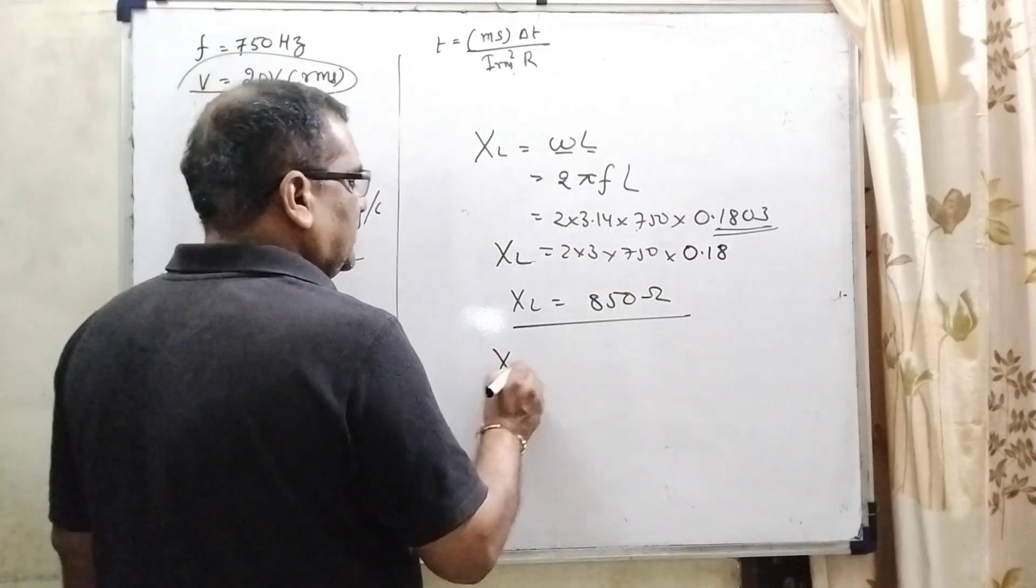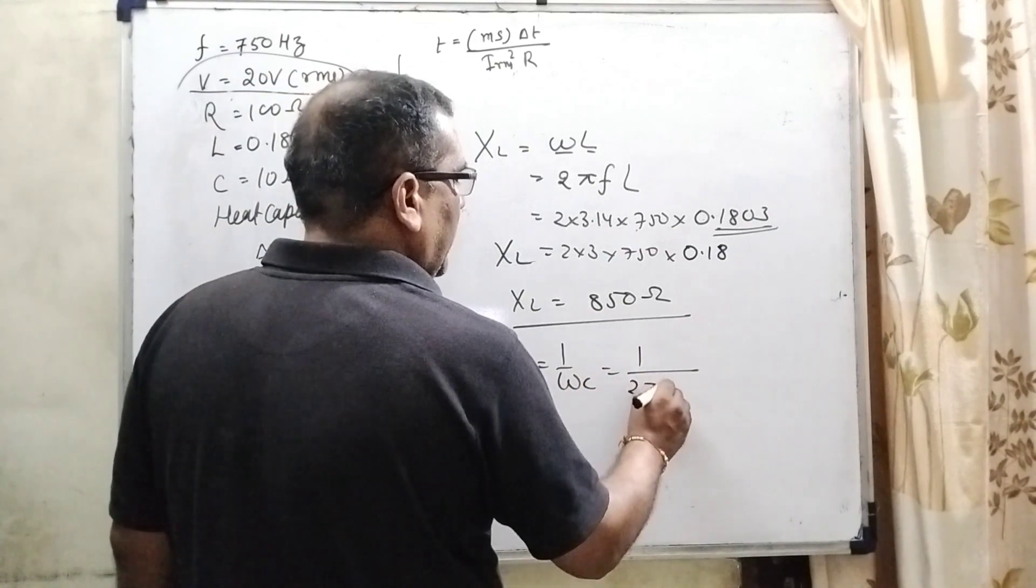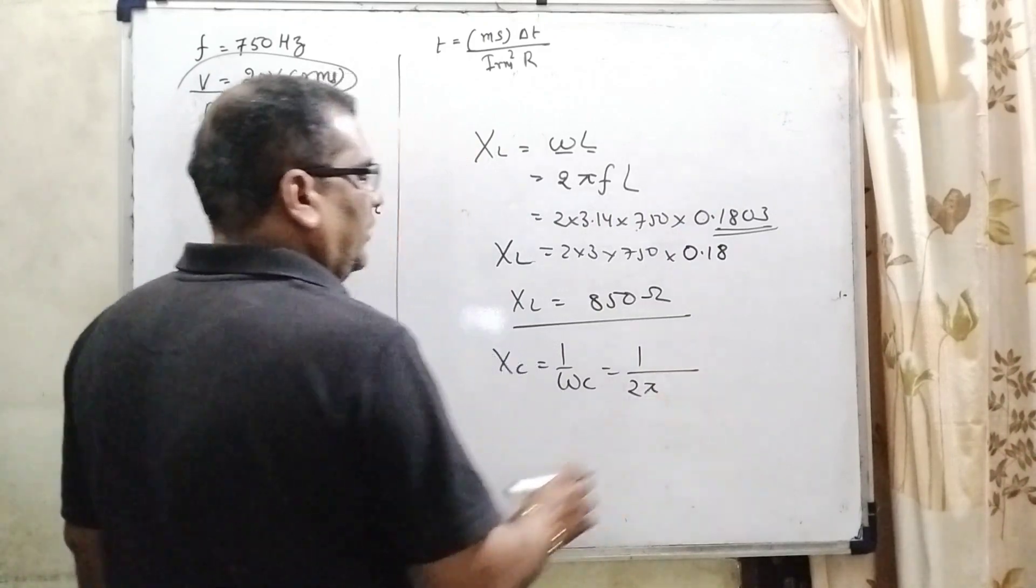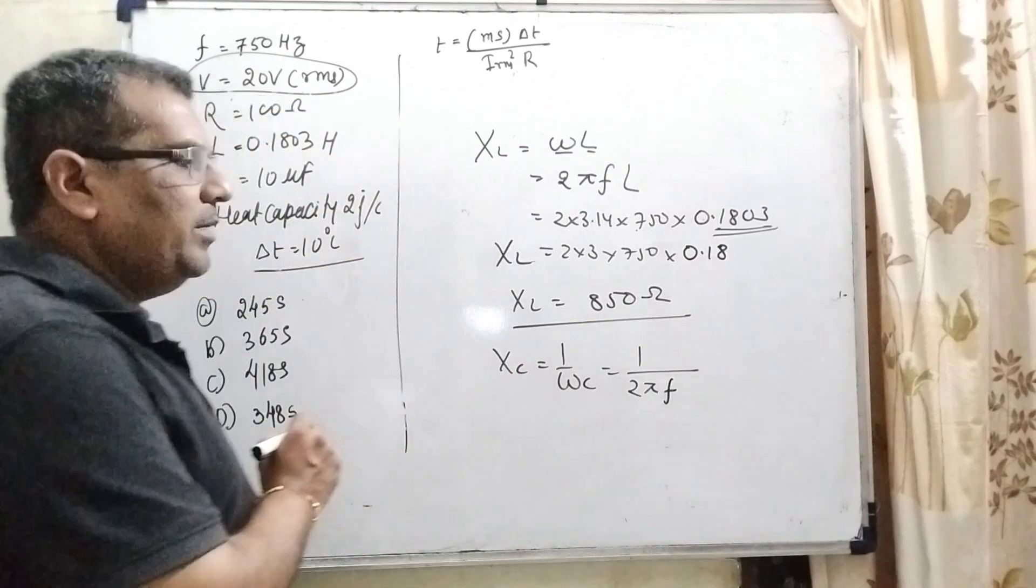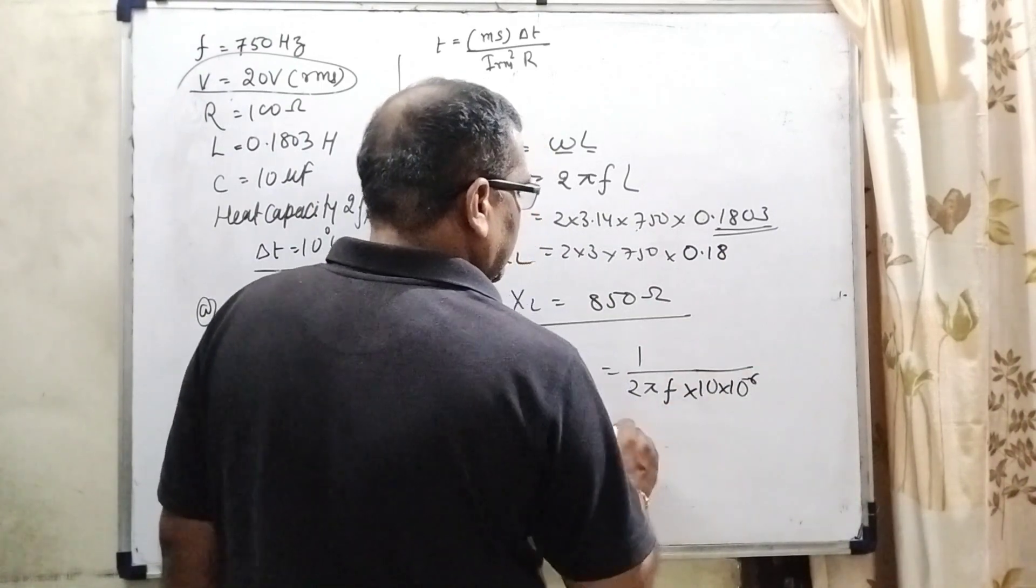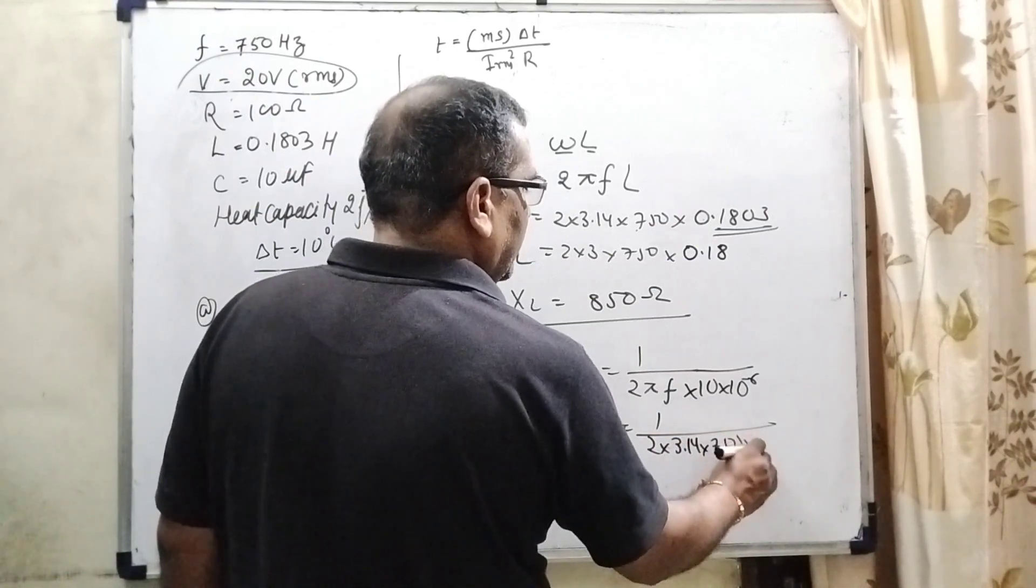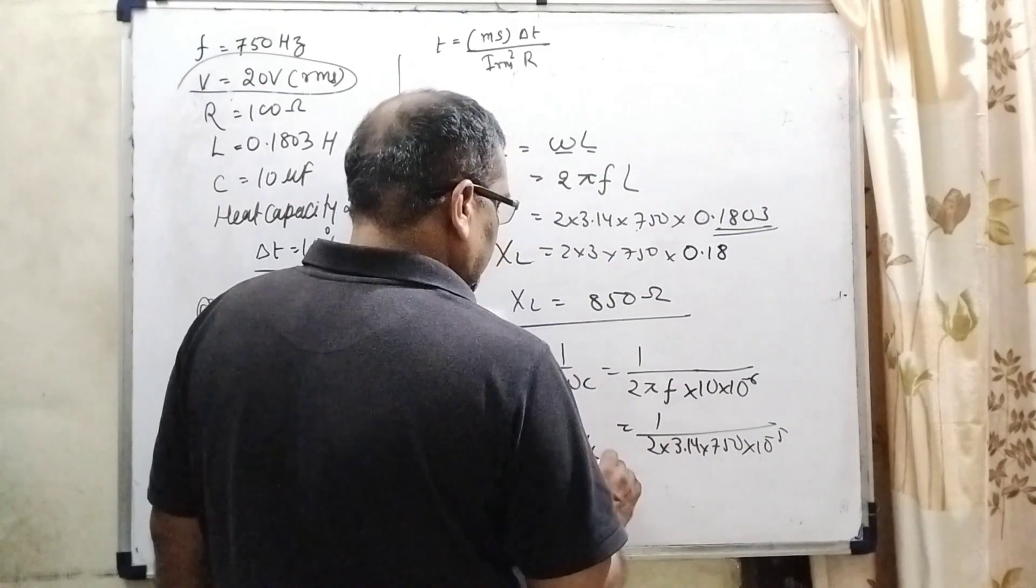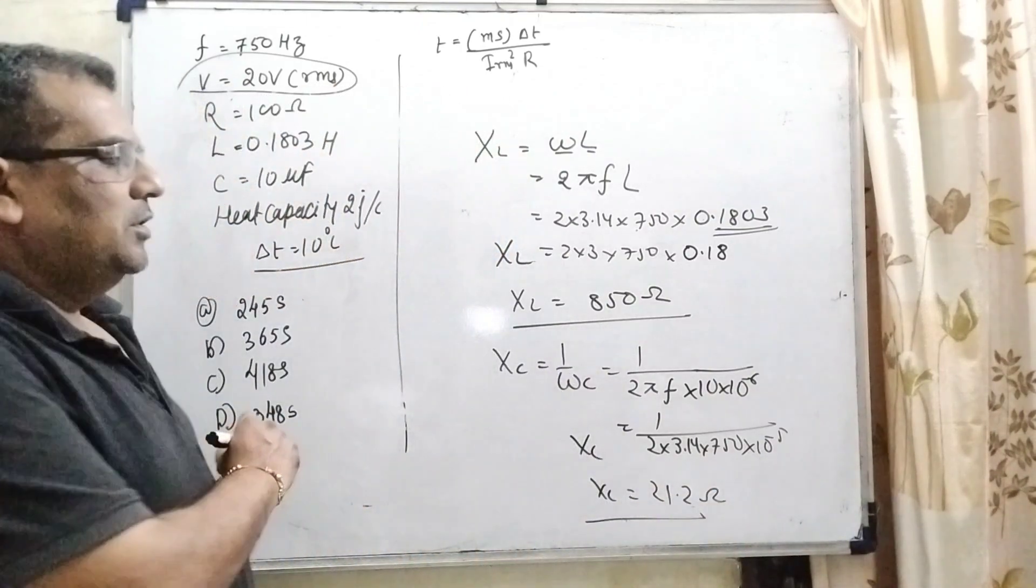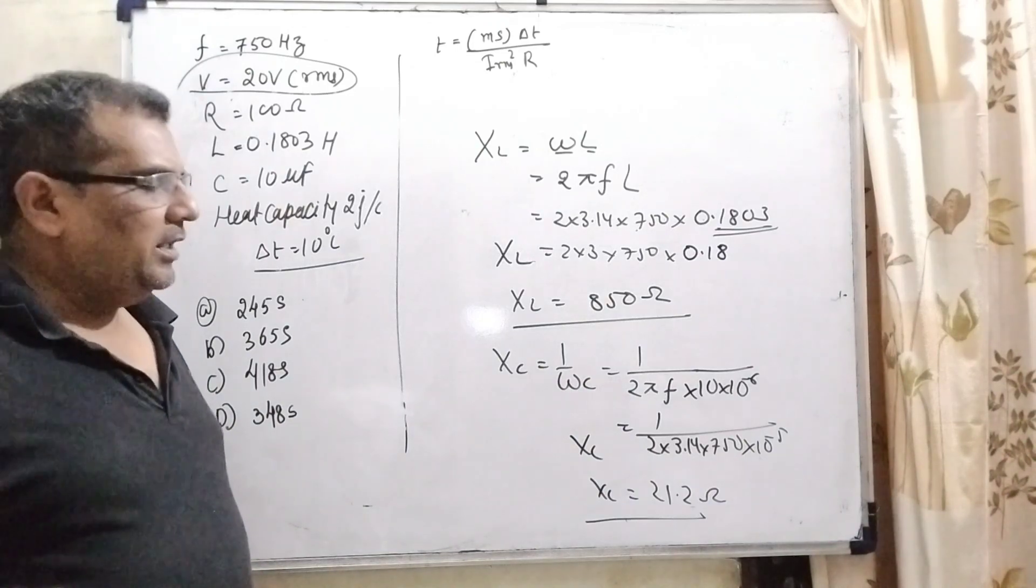And for the XC, we know that 1 upon omega C. Omega C, omega can be written as 2 pi and frequency, this is the value of omega. And C, capacitance is given that 10 micro, means 10 to the power minus 6. Now substitute all this value, 2 into 3.14 into 750 and 10 to the power minus 6. After solving this, we will get 21.2 approximate its value. So here we get 850 ohm and 21.2 ohm XC.